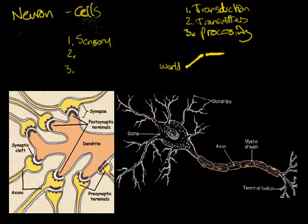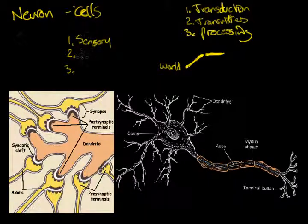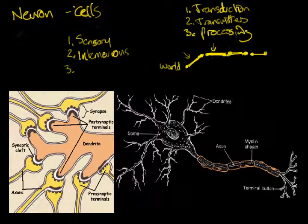Those next neurons make up a class of neurons called interneurons. Interneurons are connected on both ends to other neurons. So if this one is our sensory neuron, this one is an interneuron because it's connected to a sensory neuron on this end, and we could perhaps have another neuron on this end. Obviously, the majority of our nervous system is made up of interneurons. All of our brain is interneurons, lots of neurons doing processing.